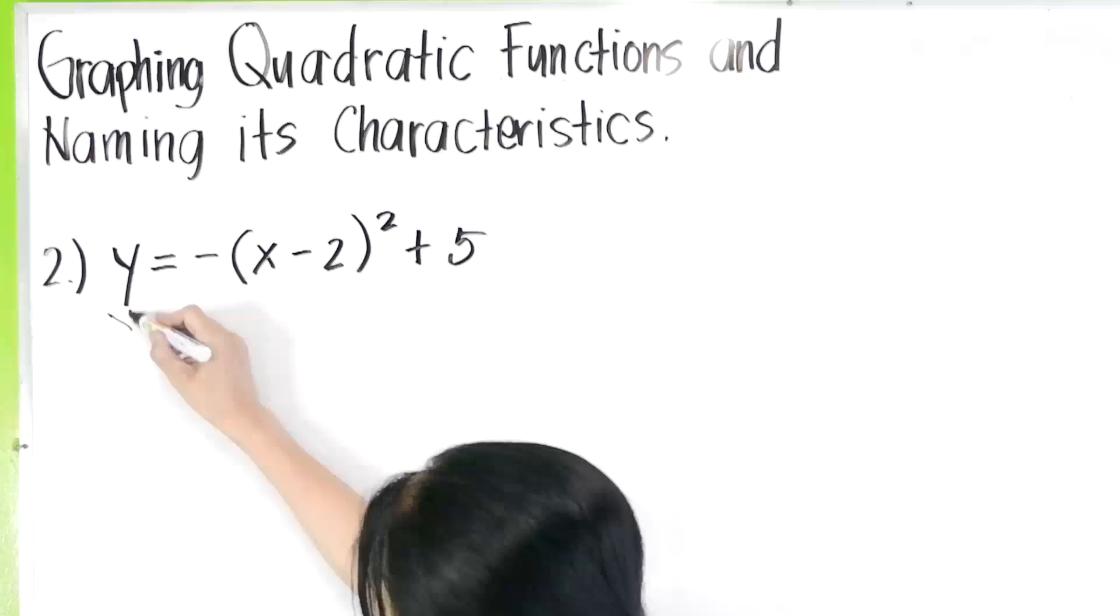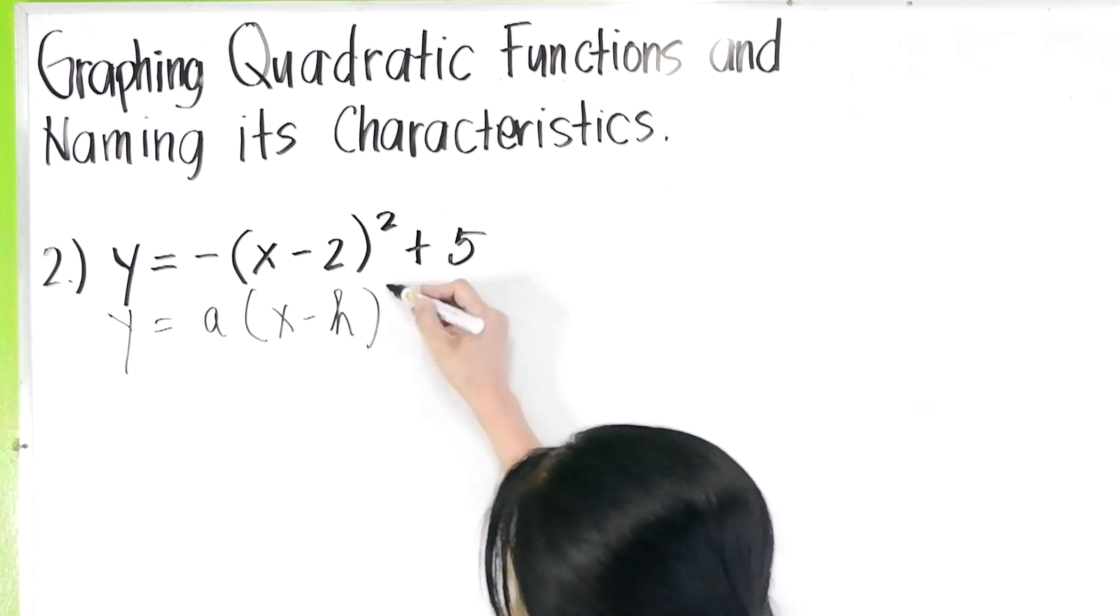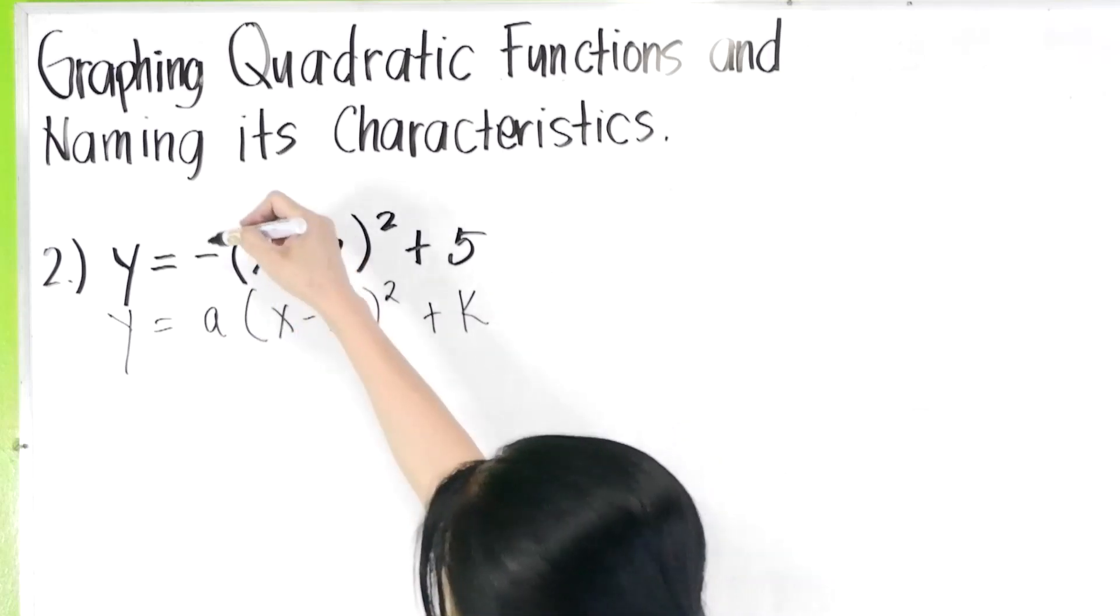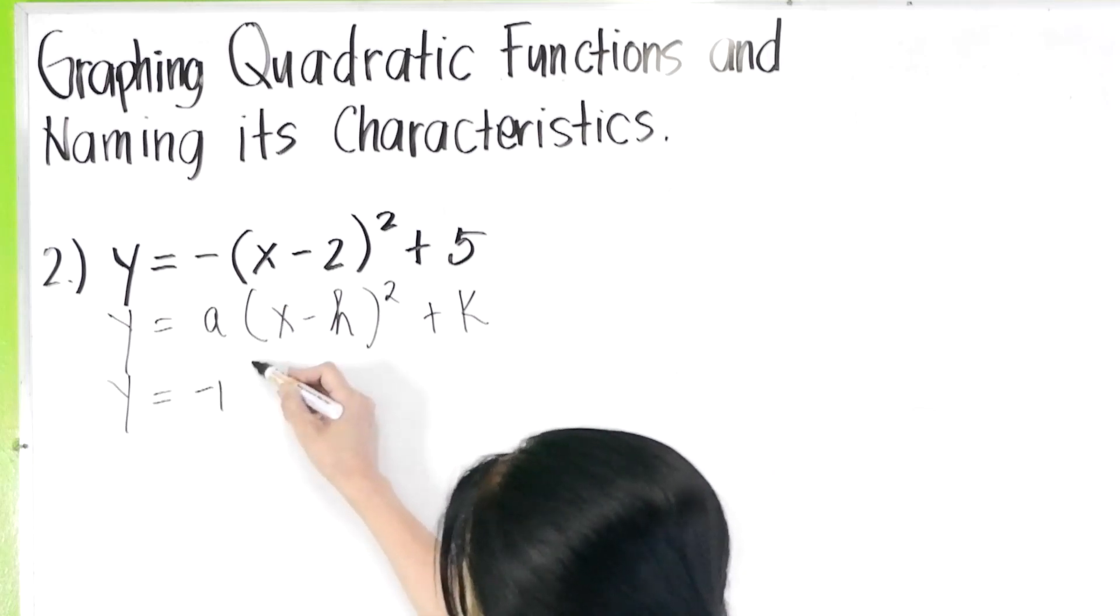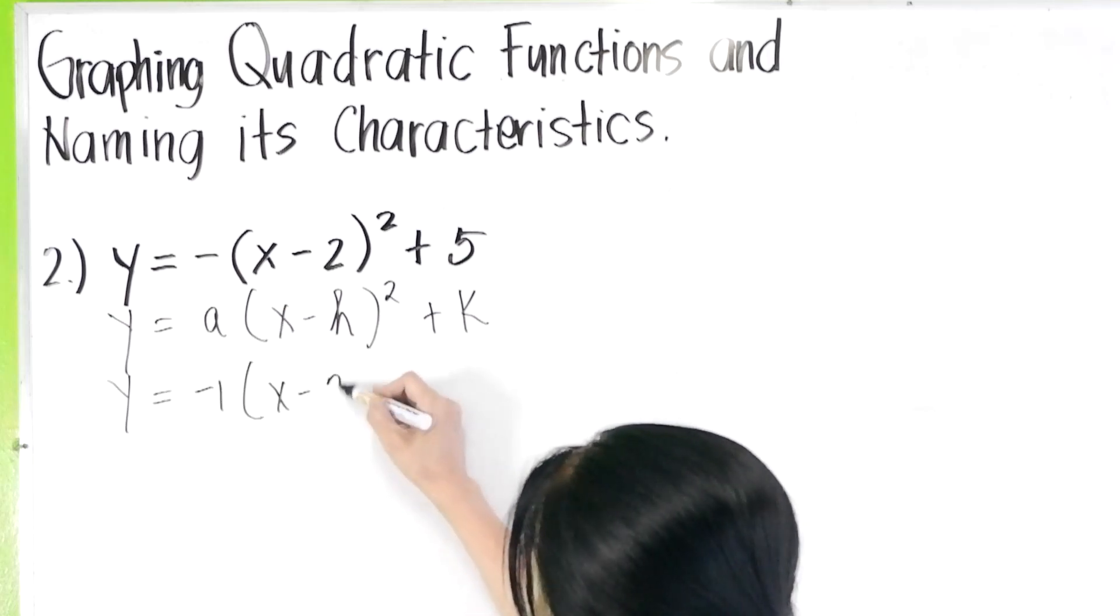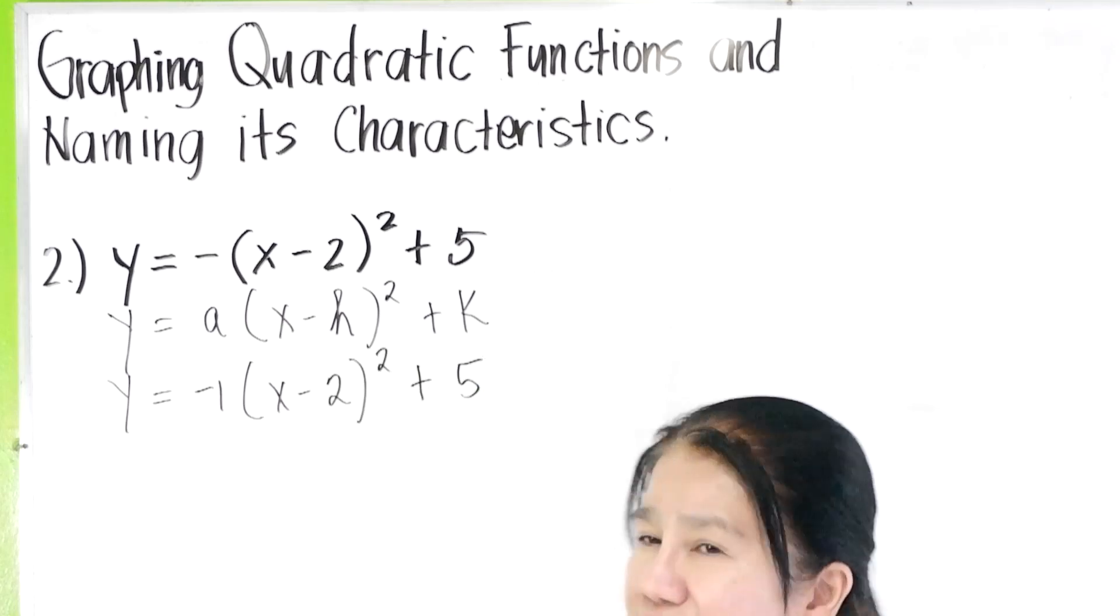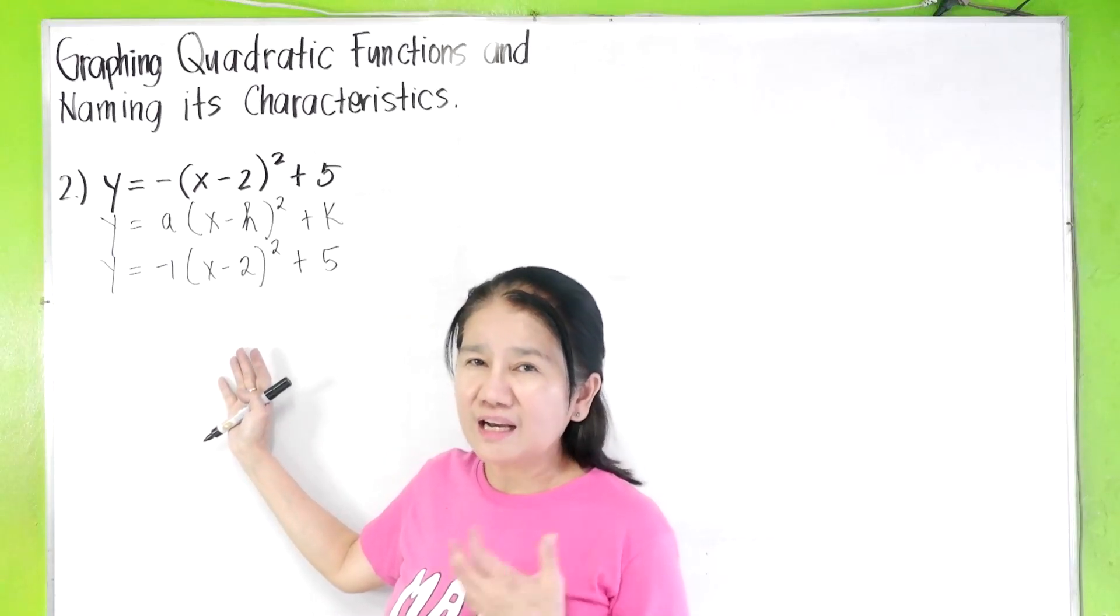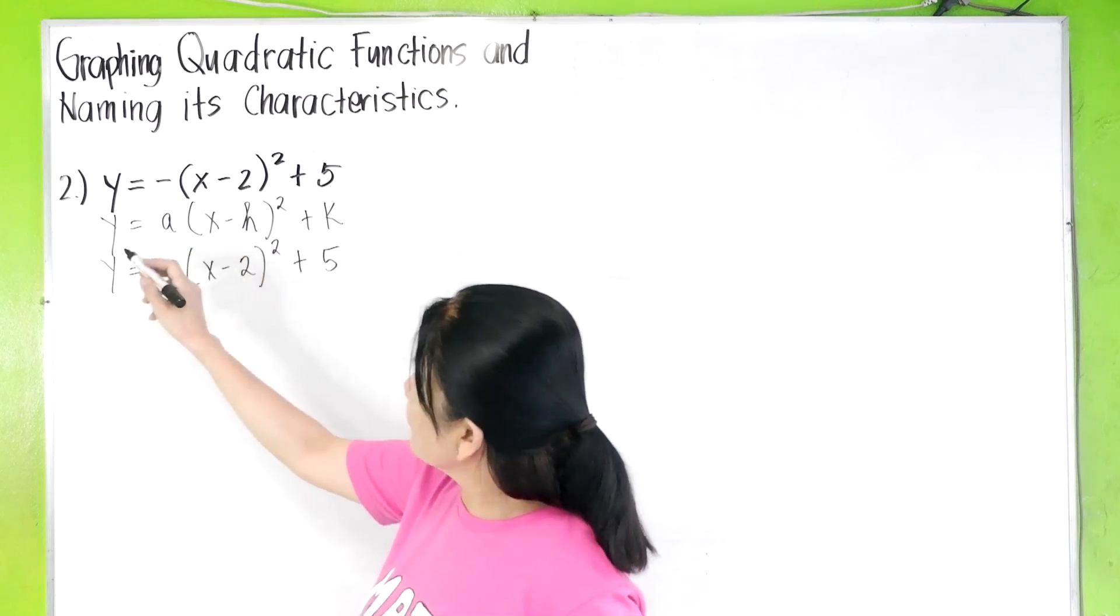In other words, it is written in the form a quantity x minus h quantity squared plus k. Of course, this means that you have a negative one here. So this is now y equals negative one quantity x minus two quantity squared plus five.